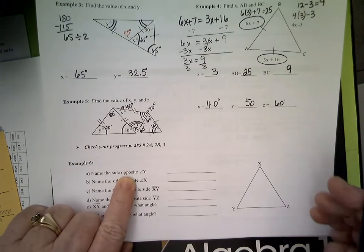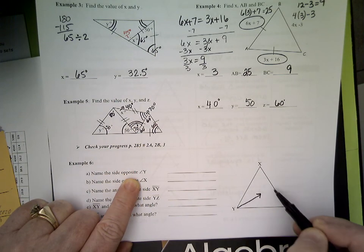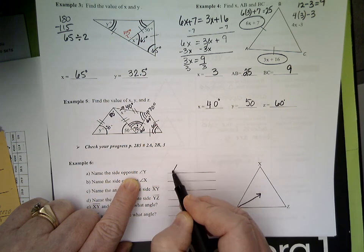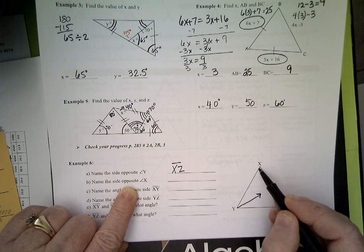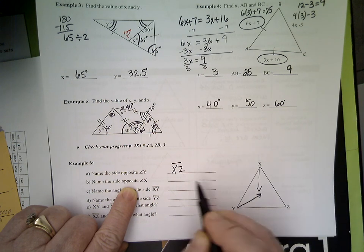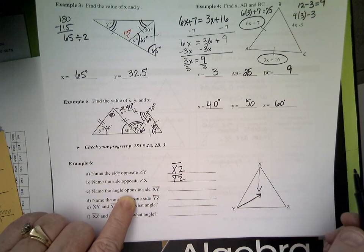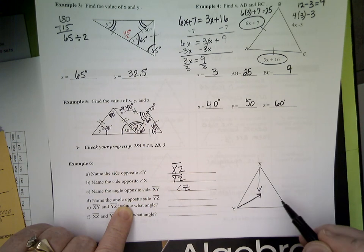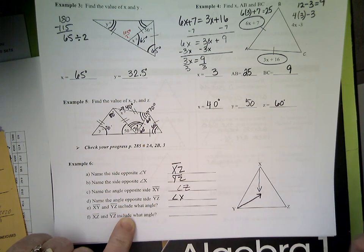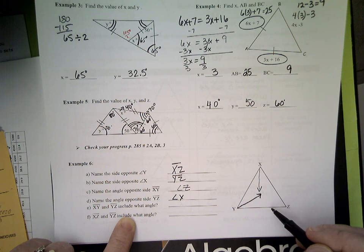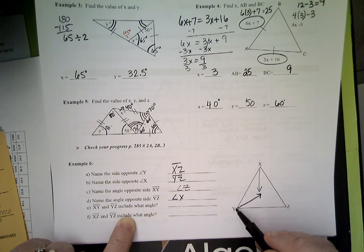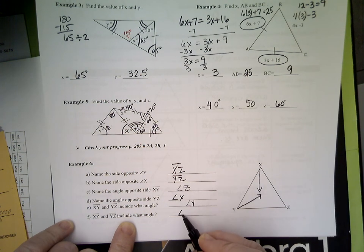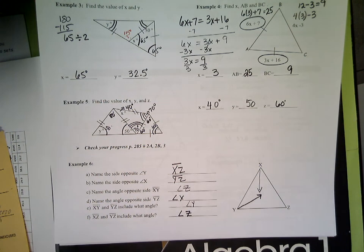Name the side opposite y. What's the name of that side opposite y? XZ. Name the side opposite x. YZ. Name an angle opposite XY. YZ. Name an angle opposite side YZ. XY and YZ include what angle? Y. XY and YZ include what angle? Y.